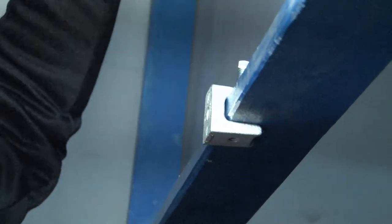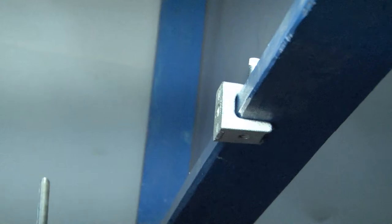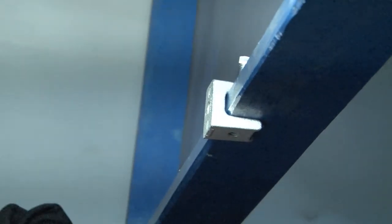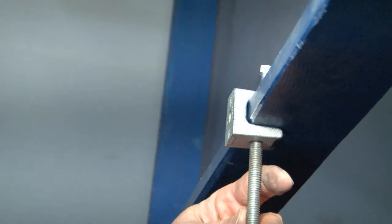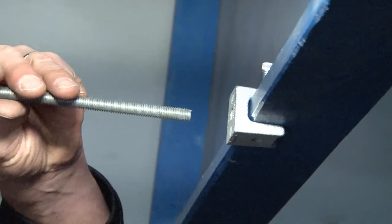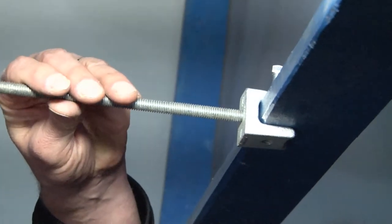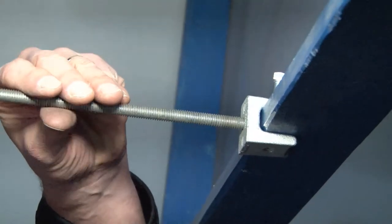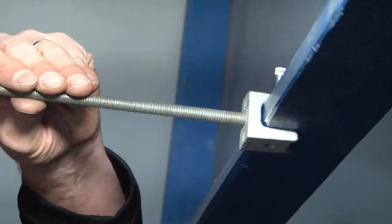At this point you can take your 3.8 threaded rod, which is the most common threaded rod and most common fasteners in the industry. You align it with the bottom hole or the back hole and simply screw in the threaded rod until it tightens down against the beam.